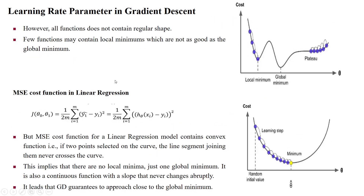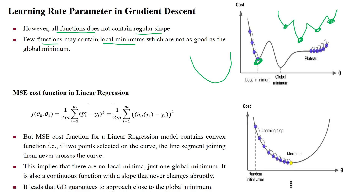The learning rate also gives the shape to the cost function. When taking a minimum learning rate, some functions do not give a regular shape — they may contain different local minima. There may be multiple local minima visible in the graph, but only one of these is the global minimum. The algorithm might incorrectly think a local minimum is the global minimum, missing the true global minimum. This kind of issue is also possible when selecting a minimum learning rate.